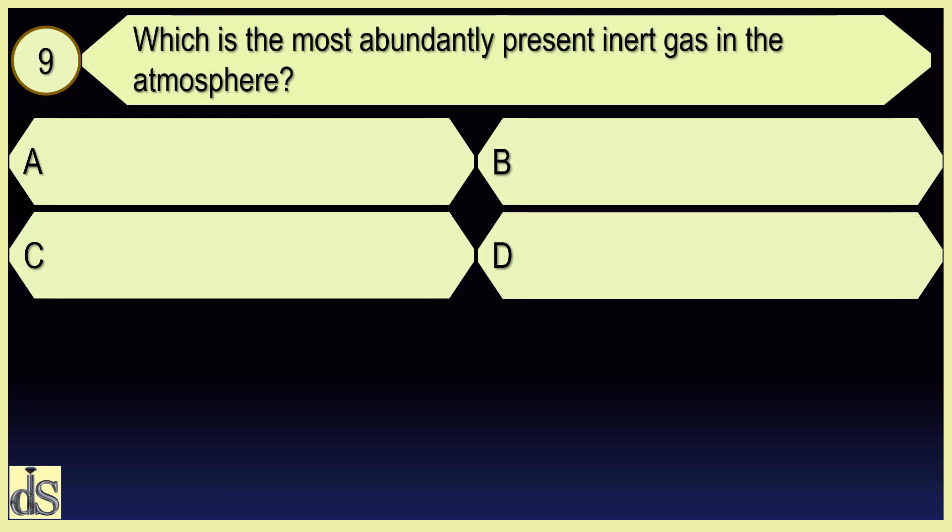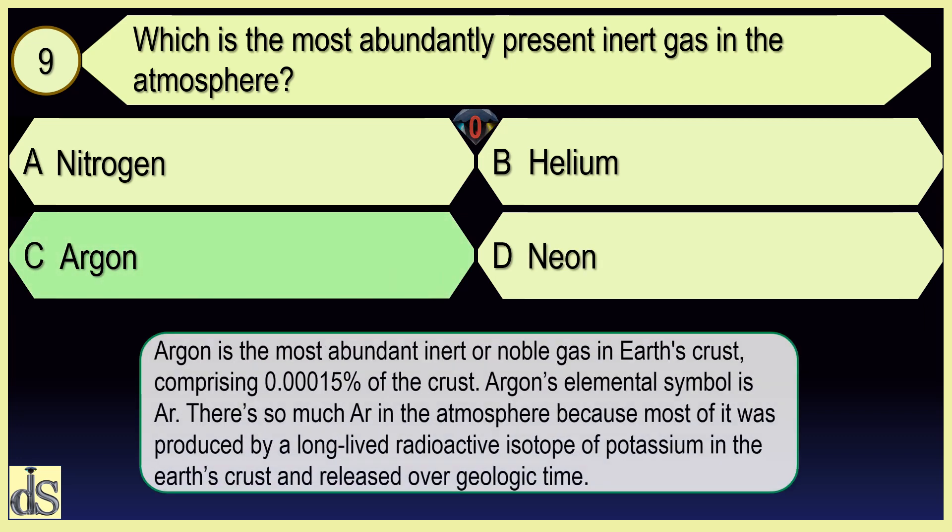Which is the most abundantly present inert gas in the atmosphere? Argon.